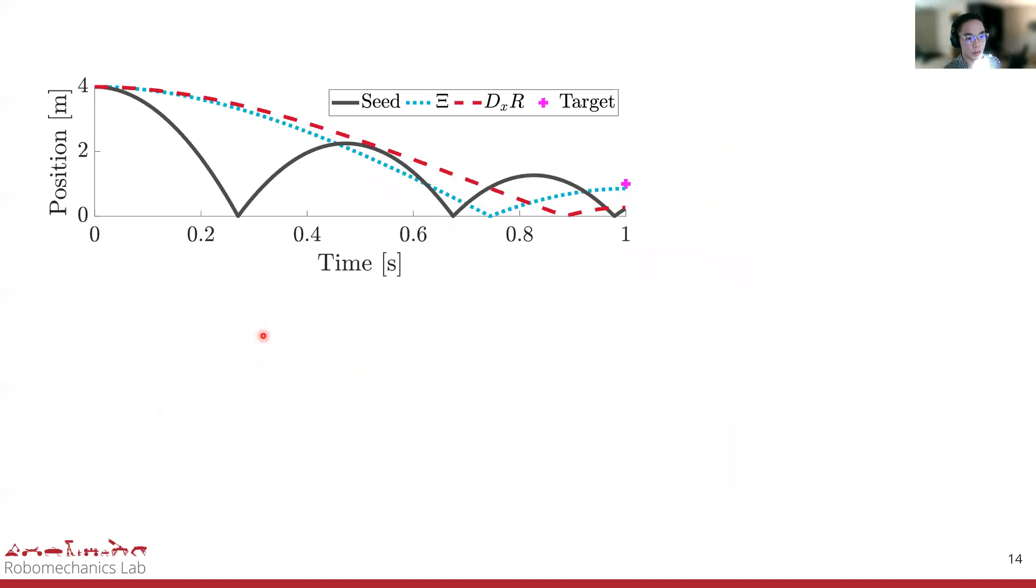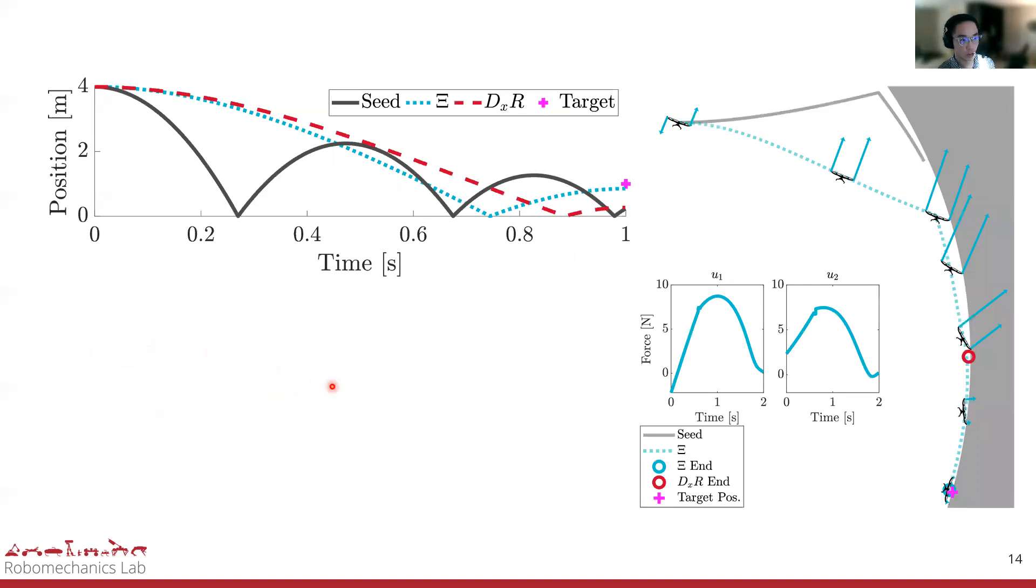Again, this is the bouncing ball example that I showed previously. However, we also show a variety of results for different systems where we compare the Jacobian of the reset map versus using the saltation matrix. For all these examples, the Jacobian of the reset map variant never converged and produced trajectories with significantly higher costs. In the example on the right, a quadrotor is tasked to perch at this goal location over here marked with the pink plus sign, and we can make contact with this curved surface. When using the Jacobian of the reset map, we see the end of the trajectories marked with this red circle. It does not converge, whereas using the saltation matrix with this teal circle, we are able to converge to an optimal solution.